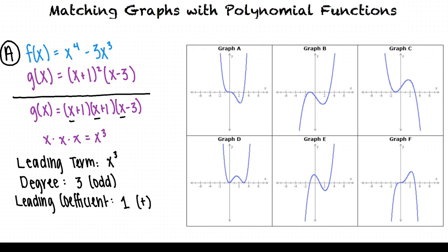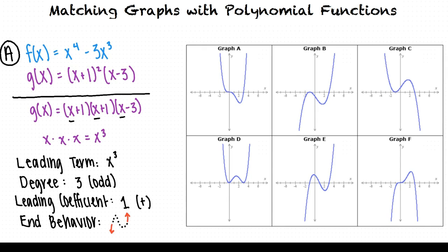So g has degree three, which is odd, and leading coefficient one, which is positive. Remembering our end behavior rules, this means the graph of g falls to the left and rises to the right. Now that we know this, we can eliminate all the graphs that fall to the right and rise to the left, as well as any graphs where the ends point in the same direction. When we do this, we're left with graph B and graph E as possible answers.